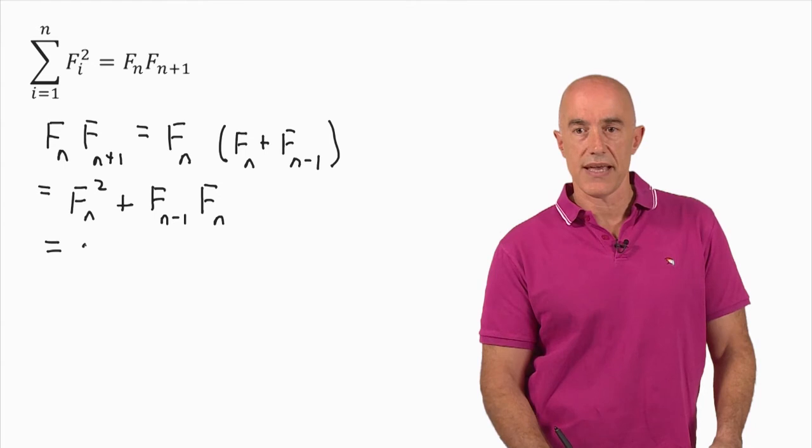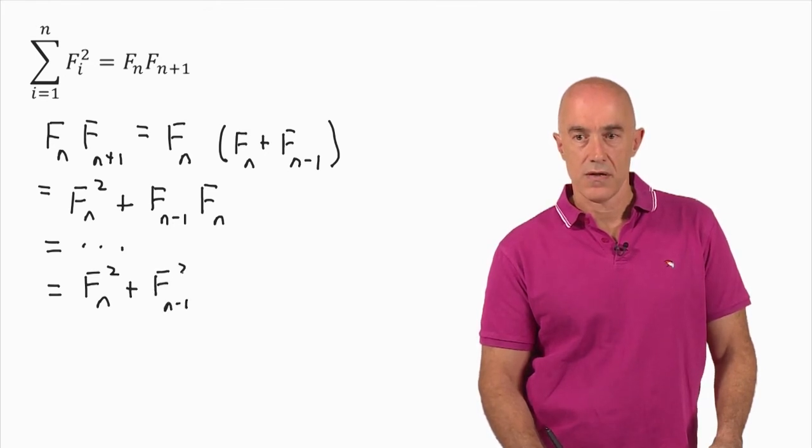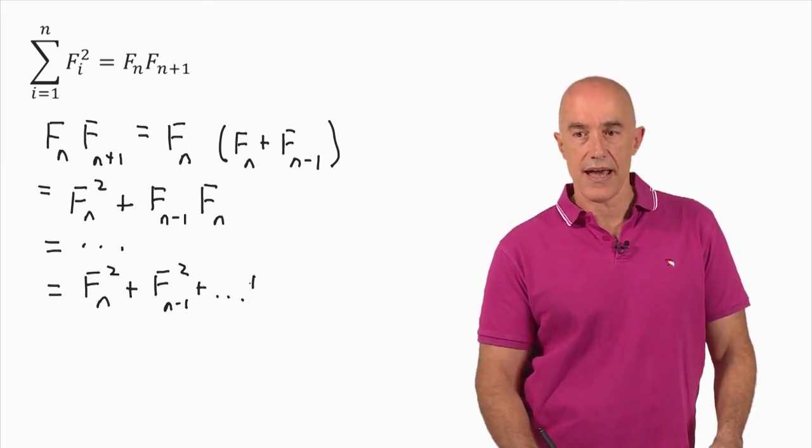So we're just repeating the same step over and over again until we get to the last bit, which will be F sub n squared plus F sub n minus 1 squared plus, and we're going all the way down to the bottom. We're going to have an F sub 2 squared.